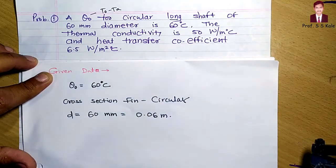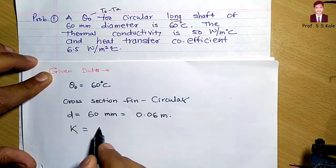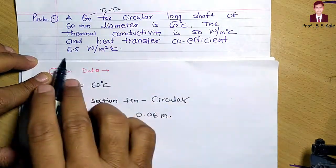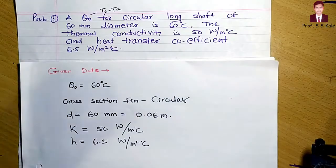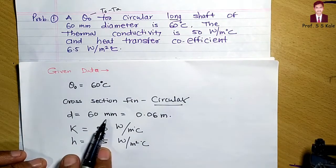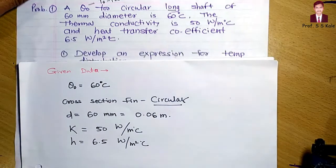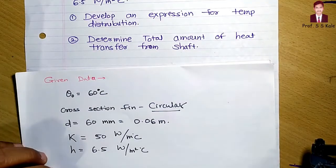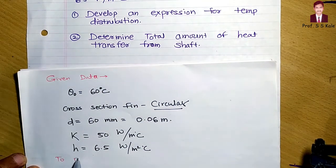Additional given data: thermal conductivity k equals 50 W/m·°C, and heat transfer coefficient h equals 6.5 W/m²·°C. We need to: first, develop an expression for the temperature distribution equation; and second, determine the total amount of heat transfer from the shaft.